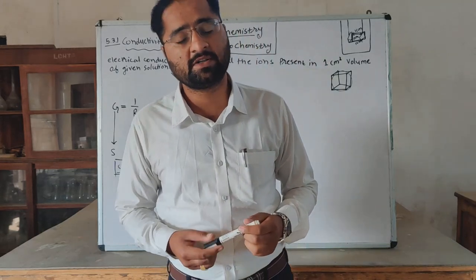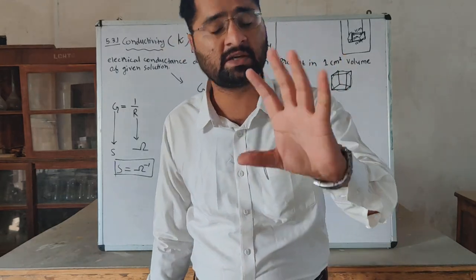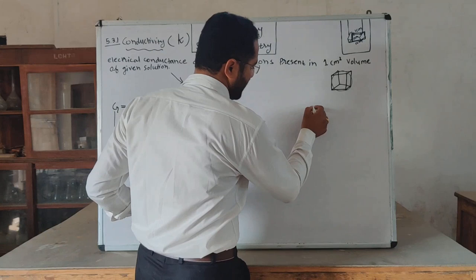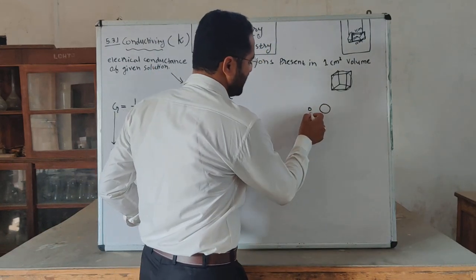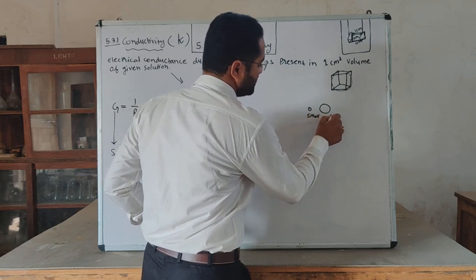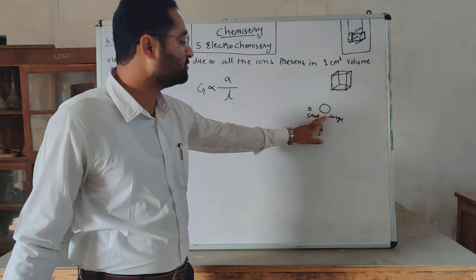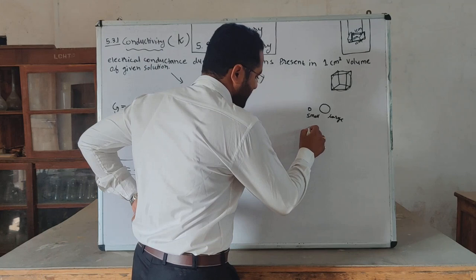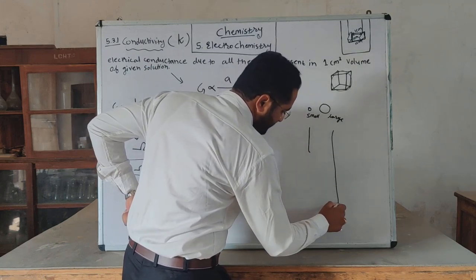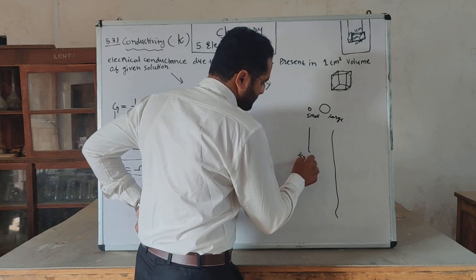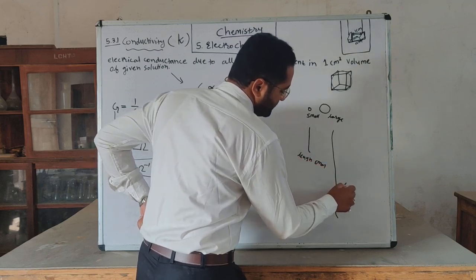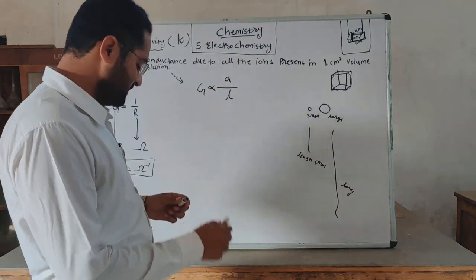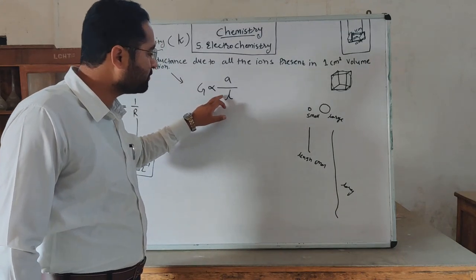Electrical conductance increases with a larger wire and decreases with a smaller wire. If the area of cross section is large, conductance is large; if the area is small, conductance is small. Similarly, if the length of the wire is large, conductance is small — hence the inversely proportional relationship.